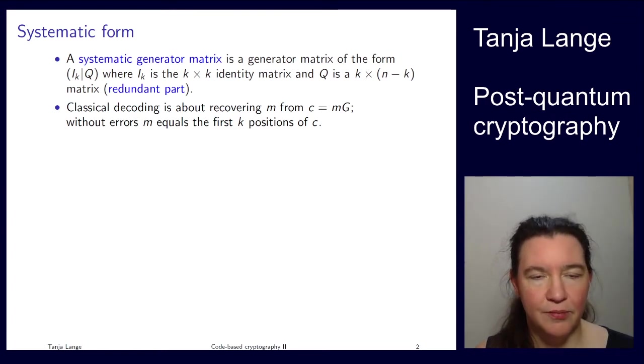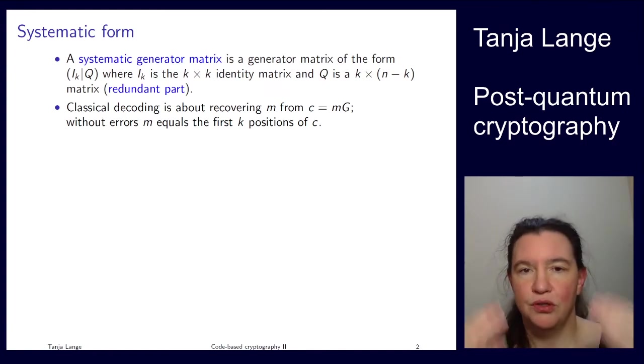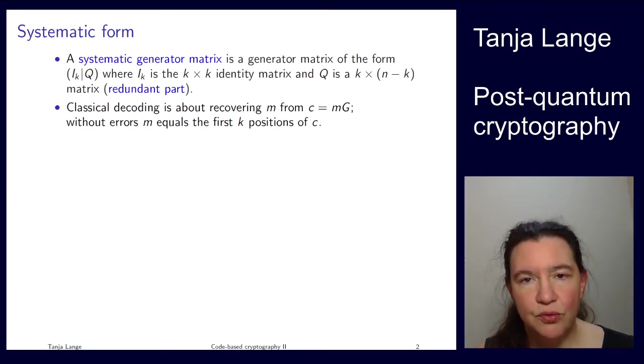Namely we need the notion of a systematic form. So we have seen the generator matrix and the parity check matrix of codes. The code is the linear subspace of F2 to the n and we can describe it as a row space of a generator matrix or as the kernel space of a parity check matrix. Now this generator matrix we can write in different forms, there is not a unique way of writing it. You can just add two of the rows and you get another valid one, like Gaussian elimination for instance. And sometimes, well, with about one third probability, you can write it in what we call systematic form.